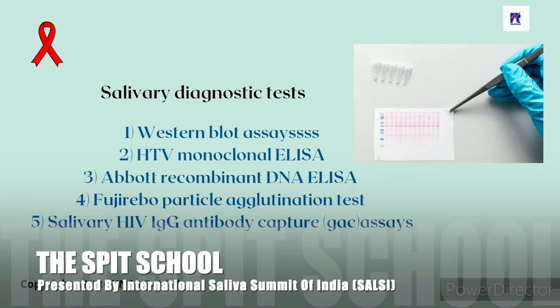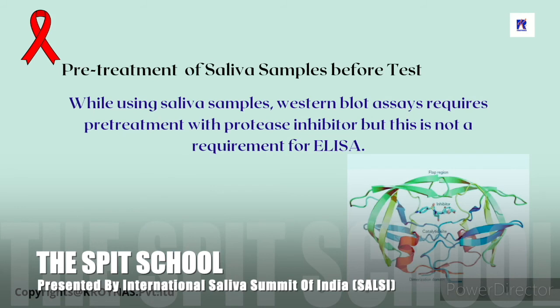Here is a list of salivary diagnostic tests: Western blot assays, HIV monoclonal ELISA, and recombinant DNA ELISA. Regarding pre-treatment before taking tests, Western blot assays require pre-treatment with a protease inhibitor, but this is not needed for ELISA.